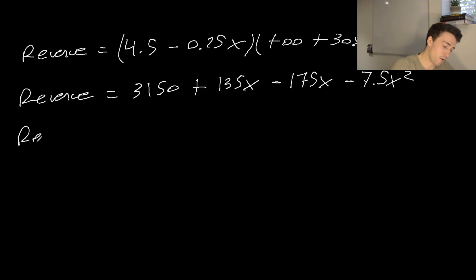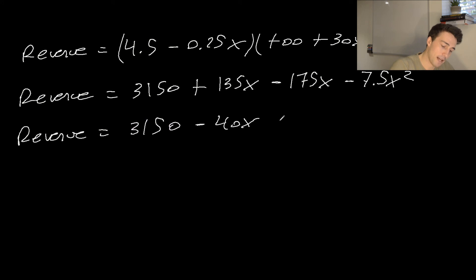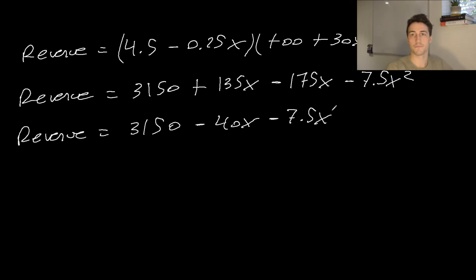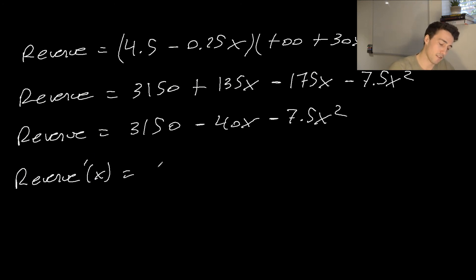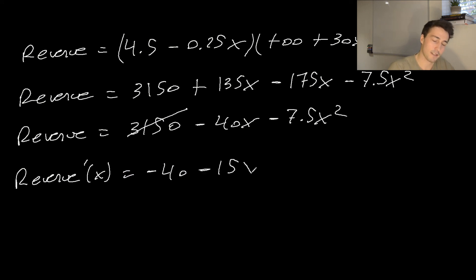Collecting like terms, the revenue equals 3,150 minus 40X minus 7.5X squared. Now I can take the derivative of this function and set it to zero. The derivative of revenue with respect to X — since X represents the number of price drops — is: R prime equals negative 40 minus 15X.